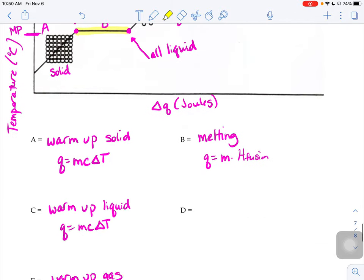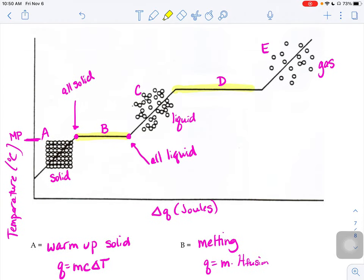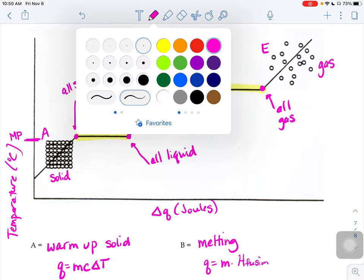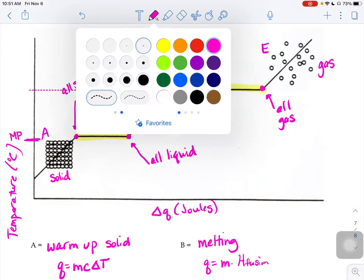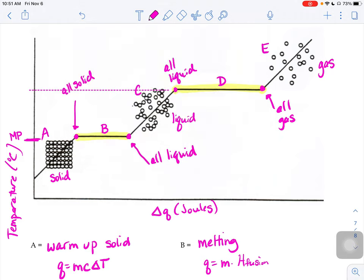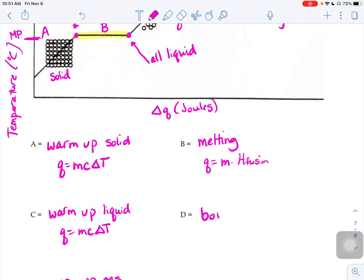If we wanted to go from, if we're going along section D here, that temperature is boiling. Remember, when you're on the left-hand corner of D, you are all liquid. But by the time you make it across D, you're all gas. And so the temperature that corresponds with D there, if I were to kind of extend this over here, right? That temperature is its boiling point, the temperature at which it goes from liquid to gas. So D is boiling. Again, we can't use MC delta T because there is no delta T. We're going to do mass times heat of vaporization.